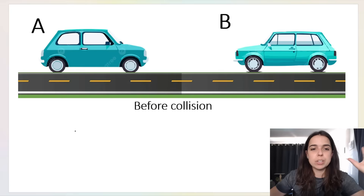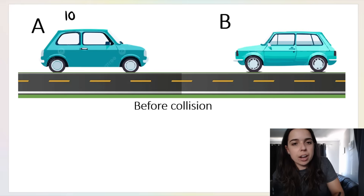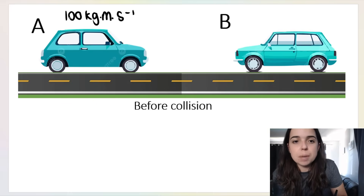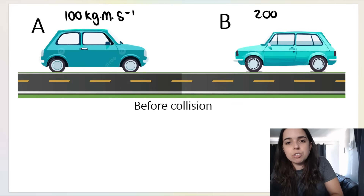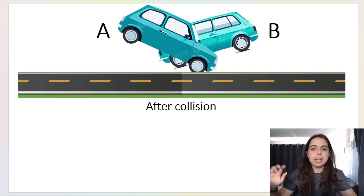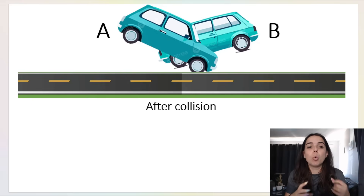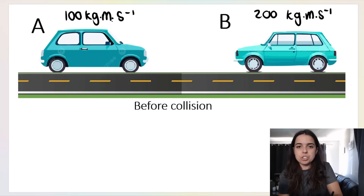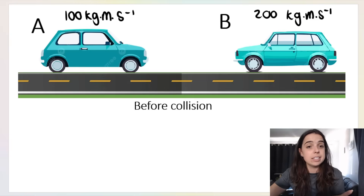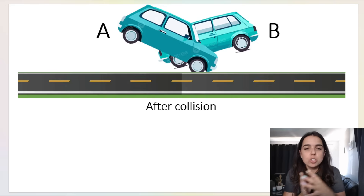Here's an example: car A and car B are traveling towards each other before a collision. Say car A has a momentum of 100 kg·m/s and car B has 200 kg·m/s — just looking at magnitude here. The total momentum before the collision is 300 kg·m/s. After the collision, the total momentum should also be 300 kg·m/s. So that momentum is conserved.